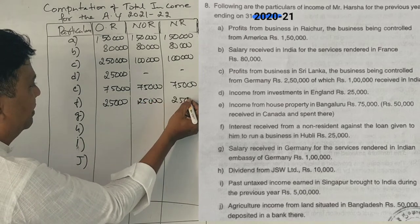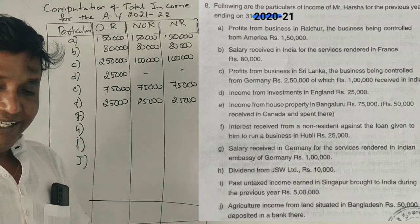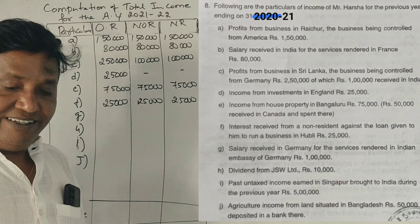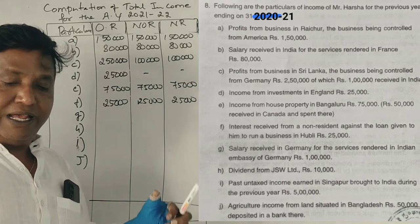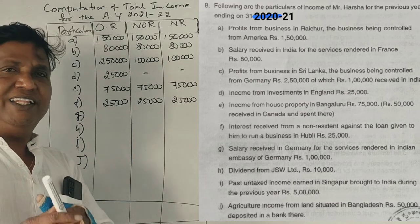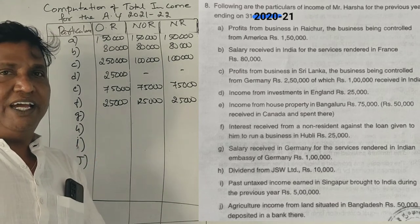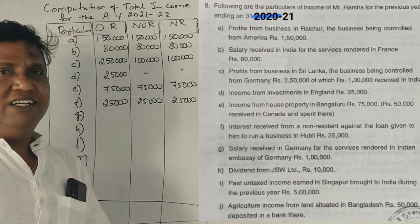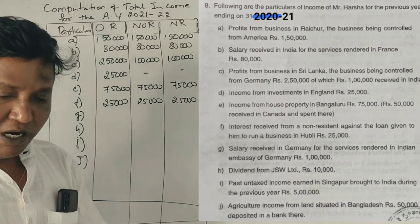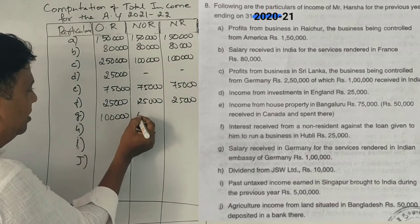Salary received in Germany for the services rendered in the Indian Embassy of Germany. As already said, if we are the Government of India employee, it is taxable — the taxable amount is 3,000.